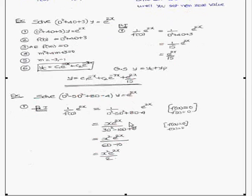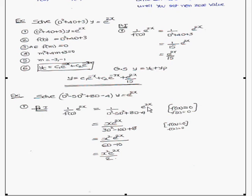Next example: (D³ - 5D² + 8D - 4)y = e^(2x). The particular integral is 1/(D³ - 5D² + 8D - 4) × e^(2x). If we substitute a = 2 into the denominator, we get 0, so this is Case 2.